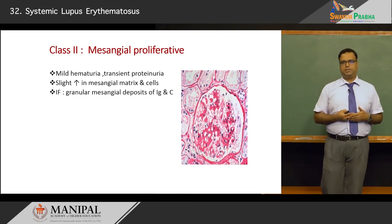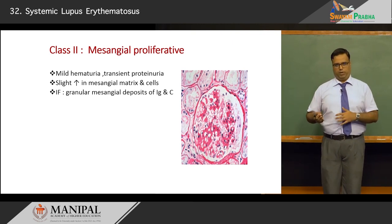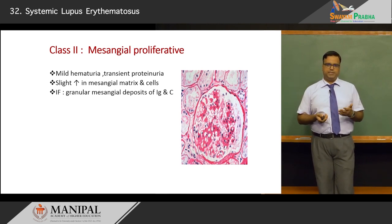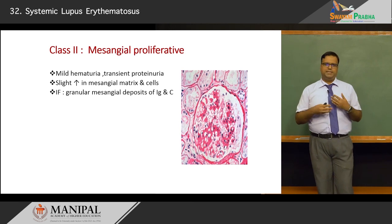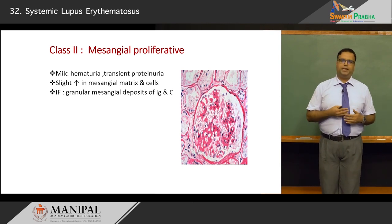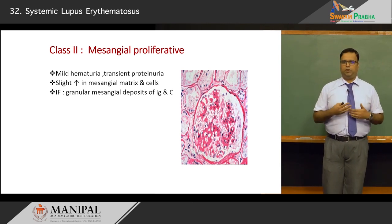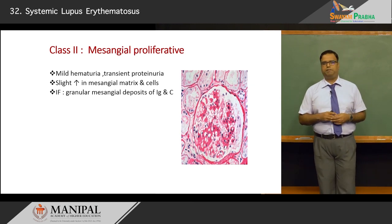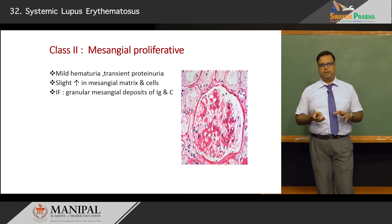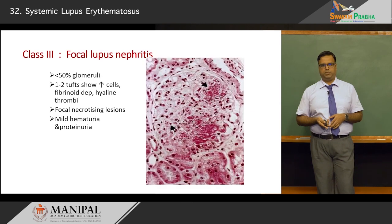Class 2 is mesangial proliferative lupus nephritis — a slight advance from class 1 with increased mesangial hypercellularity. Patients have mild transient proteinuria and mild hematuria. Immunofluorescence shows granular deposits of immune complexes and complement along the mesangium.